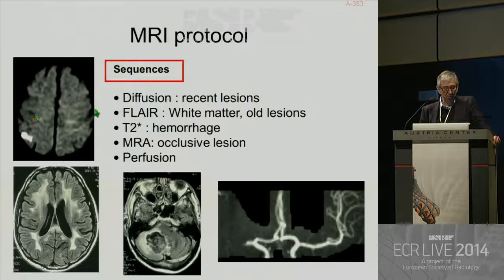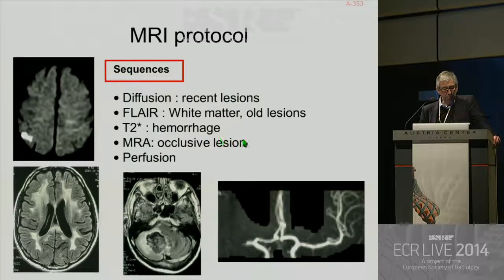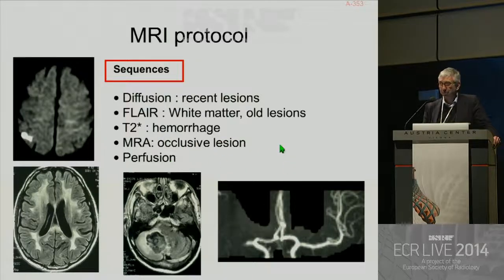So the MRI protocol you have to use for the imaging of acute ischemic stroke is this protocol: use of diffusion imaging to depict recent lesions, use of FLAIR to analyze white matter and to depict all lesions. T2-star will show you hemorrhage, MRA will show you the occlusive lesion, and finally perfusion will help you to analyze the penumbra.